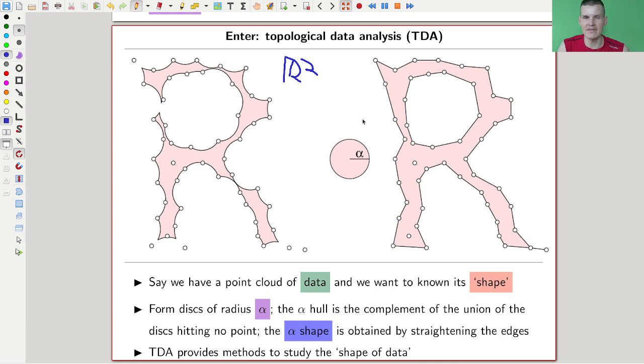So here in my example, the shape of my points somehow resembles the symbol R. One way of doing this is the so-called alpha complex or alpha shape, where you just take balls of radius alpha, and the alpha hull is the complement of the union of the balls hitting no points. You can kind of see that here - everywhere, here's a little ball of size alpha, and so on. Everything that is not hit by those, the complement is this alpha shape, and it's a nice way of trying to find shape in data.